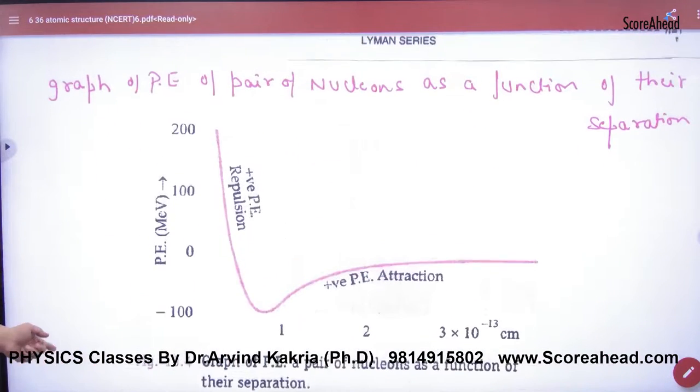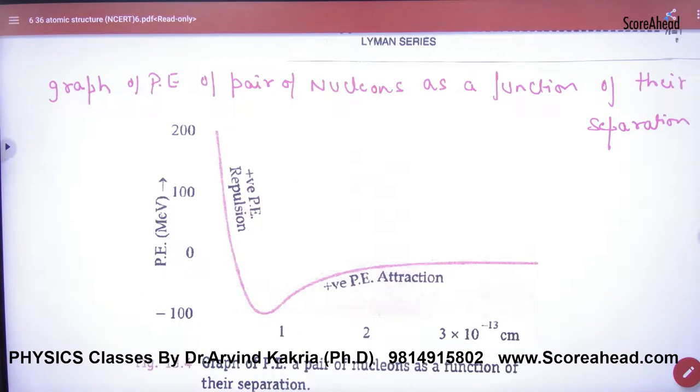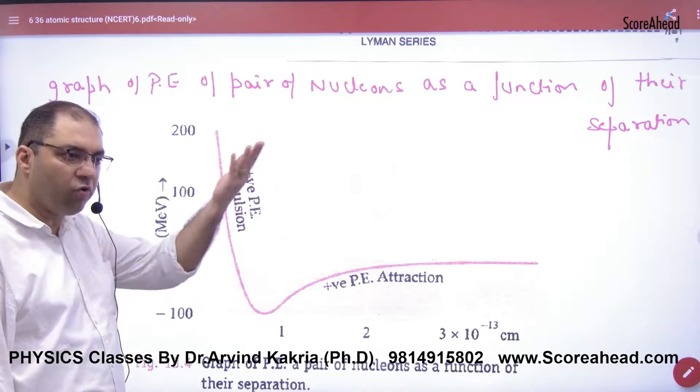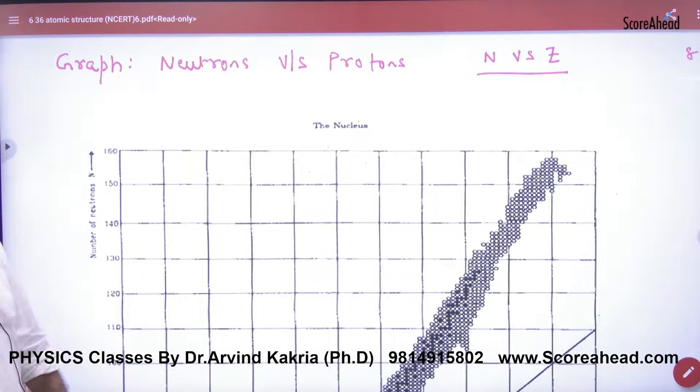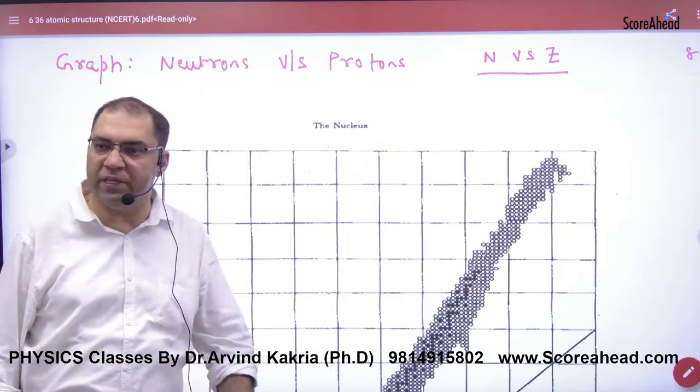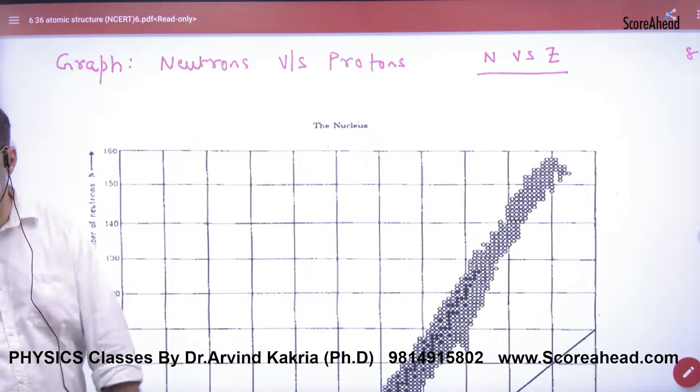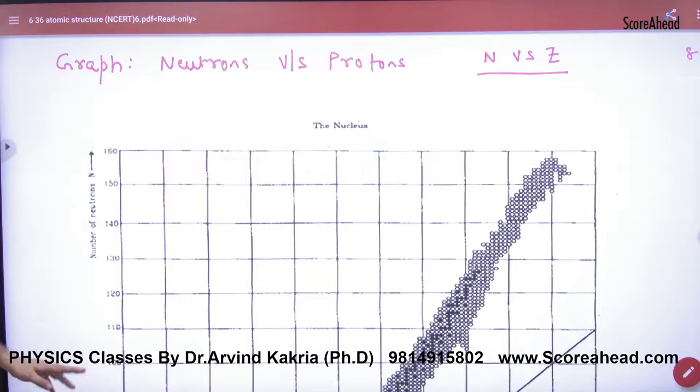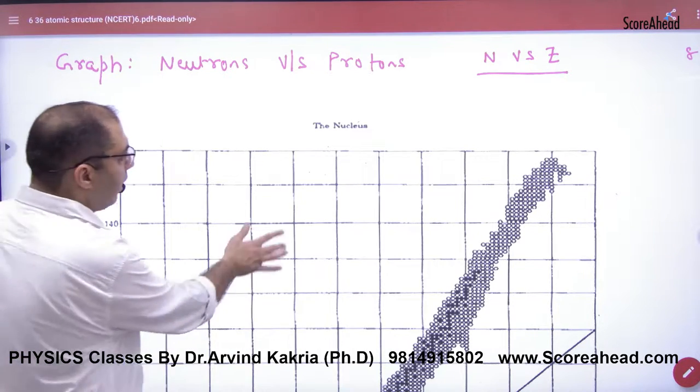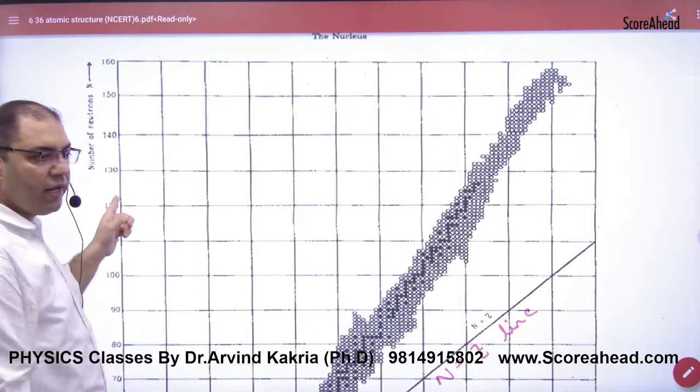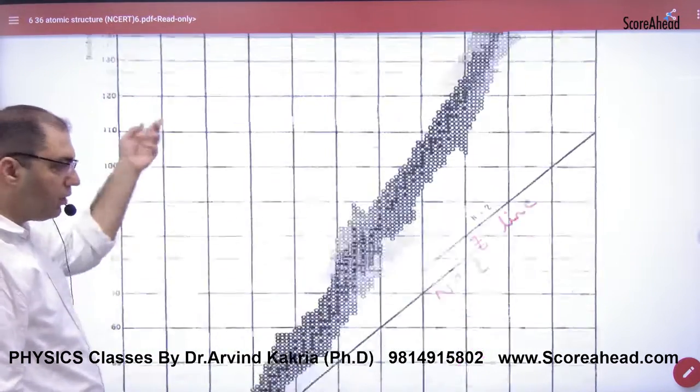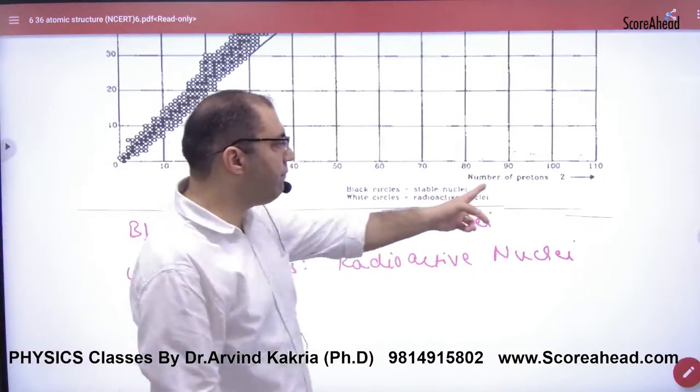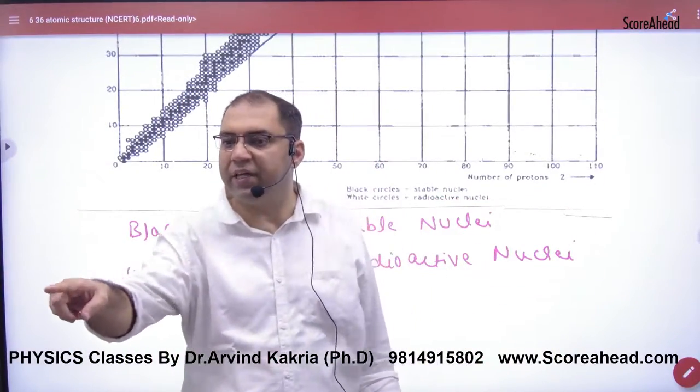We have already done graph of nuclear energy, graph of nuclear force. Now this graph. In this graph made a graph. Let's understand. In this graph, Y axis number of neutrons, X axis number of protons Z and N.